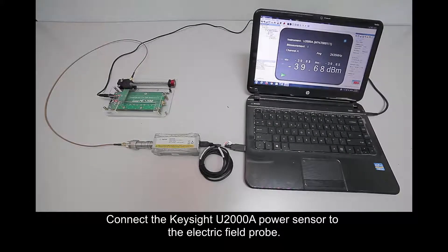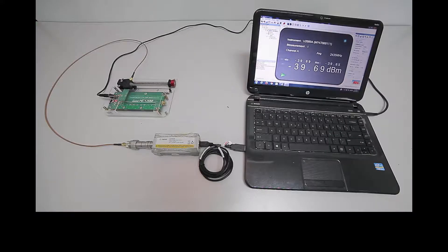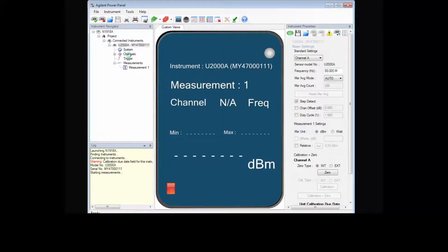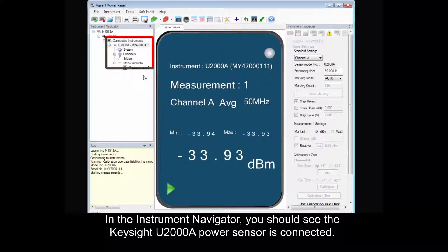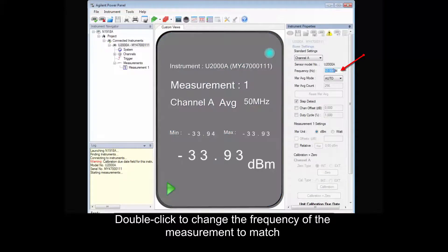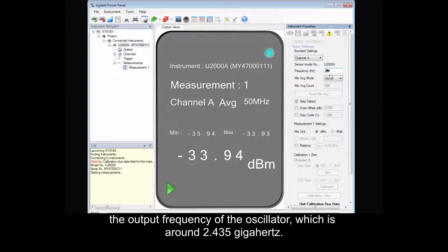Connect the Keysight U2000A power sensor to the electric field probe. Launch the power panel software. In the instrument navigator, you should see the Keysight U2000A power sensor is connected. Double click to change the frequency of the measurement to match the output frequency of the oscillator, which is around 2.435 GHz.